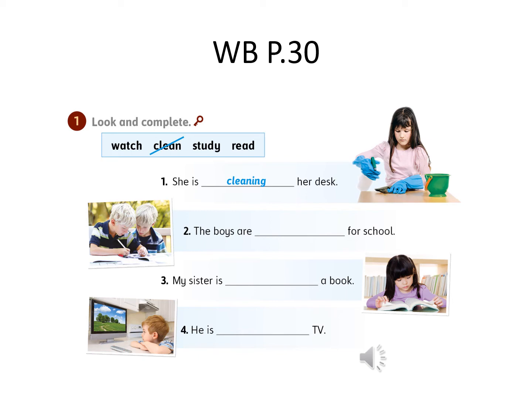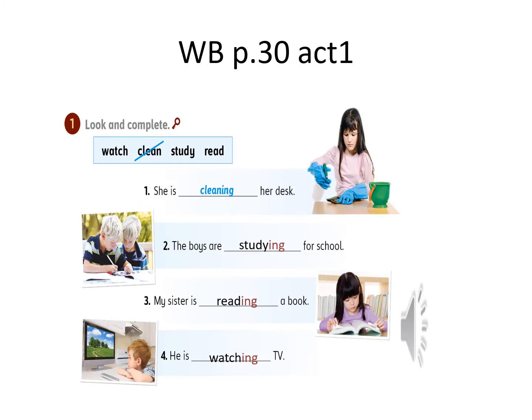Now please stop the video, write the answers, and then come back to check your answers. Let's check our answers. Number two: what are the boys doing? The boys are studying — we use the verb 'study' and add ING. Number three: my sister is reading a book — we write 'read' and add ING. Number four: what is the boy doing? He is watching TV — we use IS + watch + ING to form the present progressive.